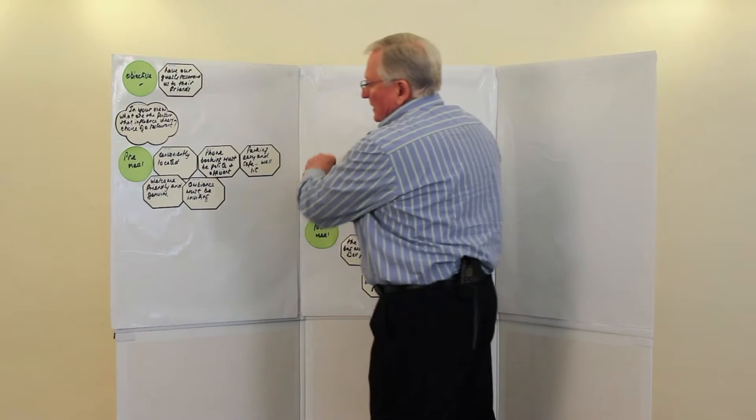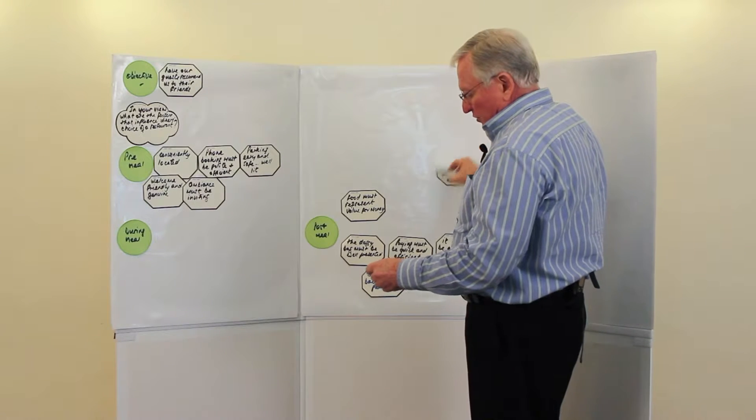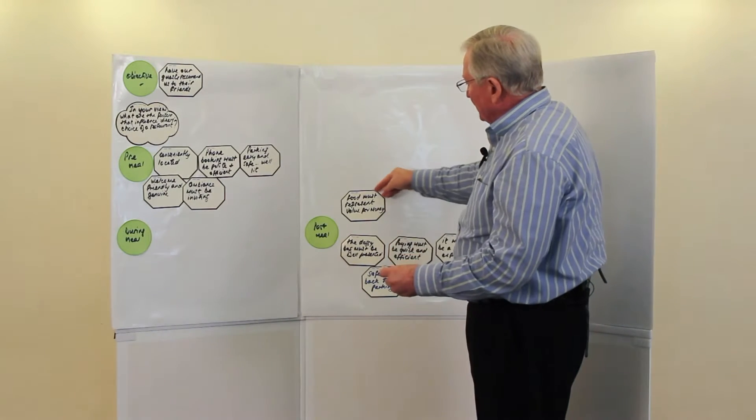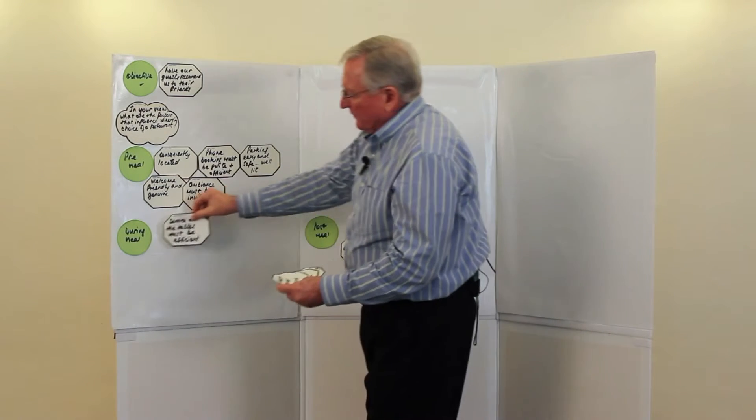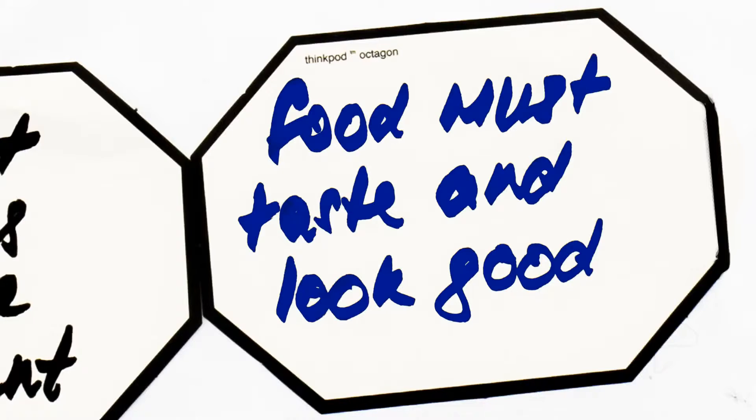And then during the meal, is the service at the tables efficient? Does the food taste and look good? Was it served at the right temperature? And does it represent value for money, for me? So we now have mapped that into a different group.